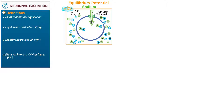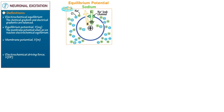But chloride ions cannot pass through the channel, which creates a separation in charge. Show that a positive charge forms within the cell. This positive charge generates an electrostatic force directed in opposition to the chemical gradient. Write that at electrochemical equilibrium, the chemical and electrical gradients are balanced. Write that the equilibrium potential is the membrane potential at which an ion reaches electrochemical equilibrium.